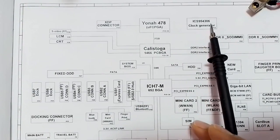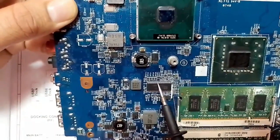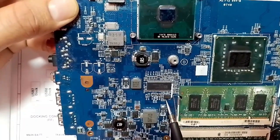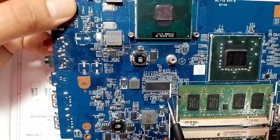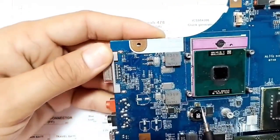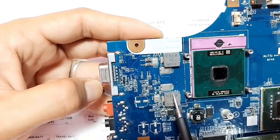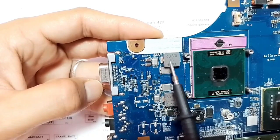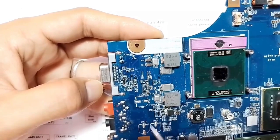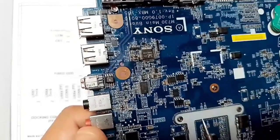Here we have the clock generator — exactly as shown in the schematic. You will always find the clock generator next to the CPU, and always near the clock generator you'll find a crystal oscillator. The crystal oscillator reference is Y or X. We also have inductors — this CPU has two channels. You'll always find inductors, MOSFETs, and ceramic capacitors together, and on the back we find more MOSFETs.